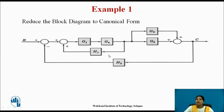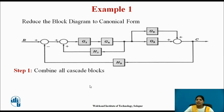Now consider the first example: reduce the block diagram to canonical form. In this given block diagram, G1 and G4 are connected in series, and G2 and G3 are connected in parallel. We solve the block diagram step by step.